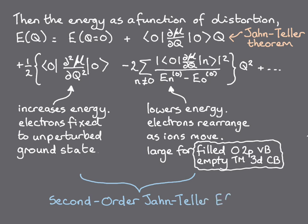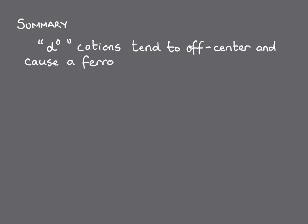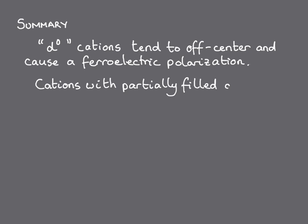The combination of these two second-order terms, known as the second-order Jahn-Teller effect, determines whether or not a material is ferroelectric. And the balance between the terms is such that d0 cations tend to off-center and cause a ferroelectric polarization, whereas cations with partially filled d shells tend to stay at the center of their coordination polyhedra and are not ferroelectric.